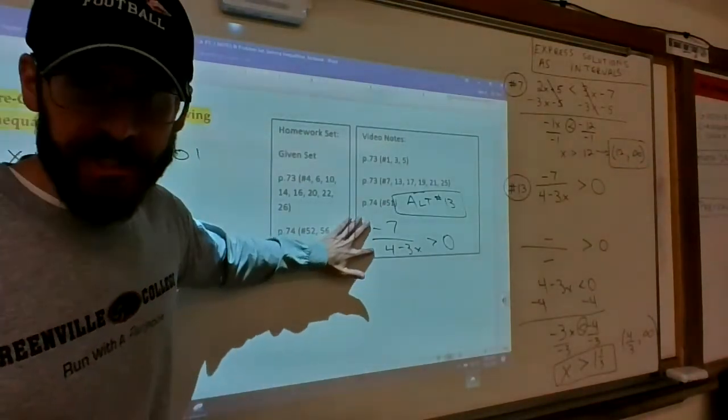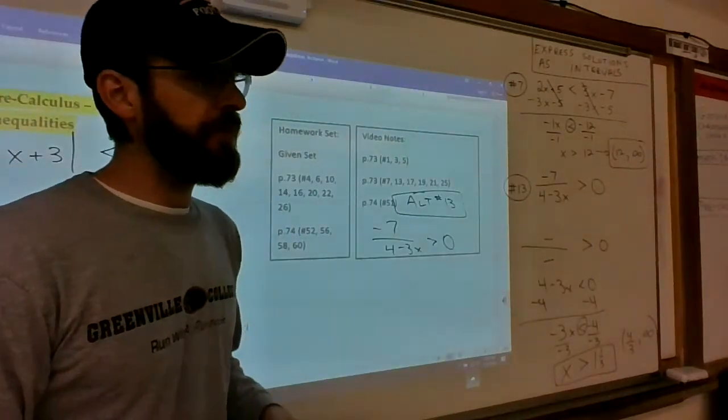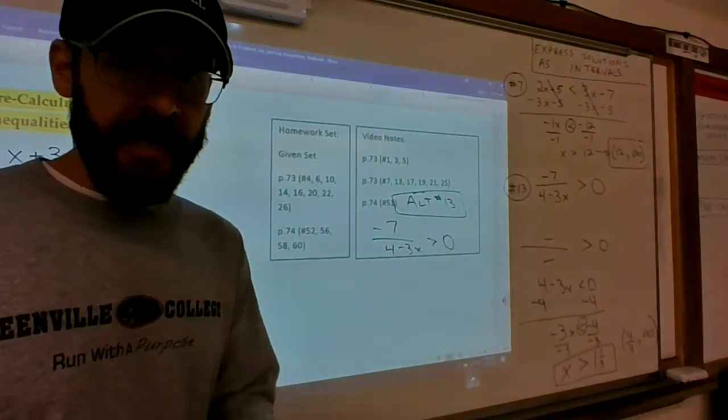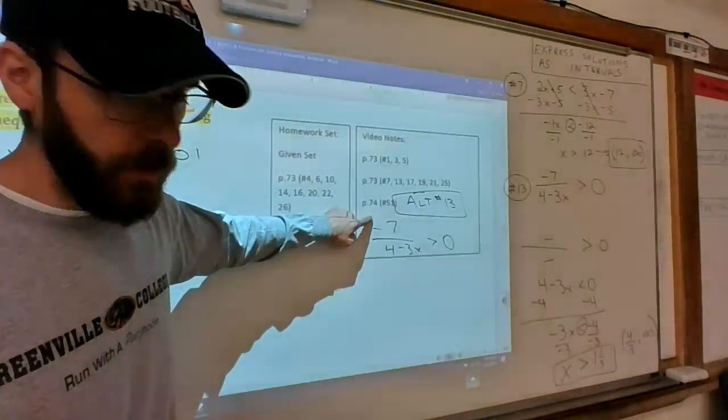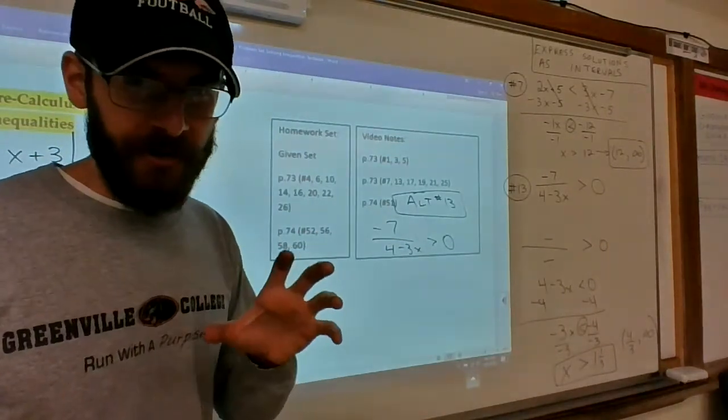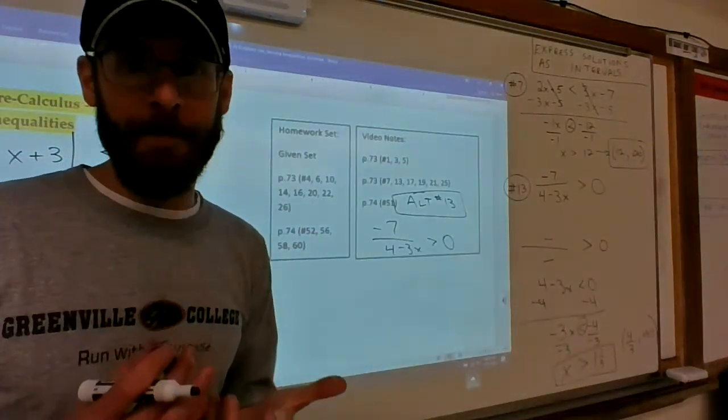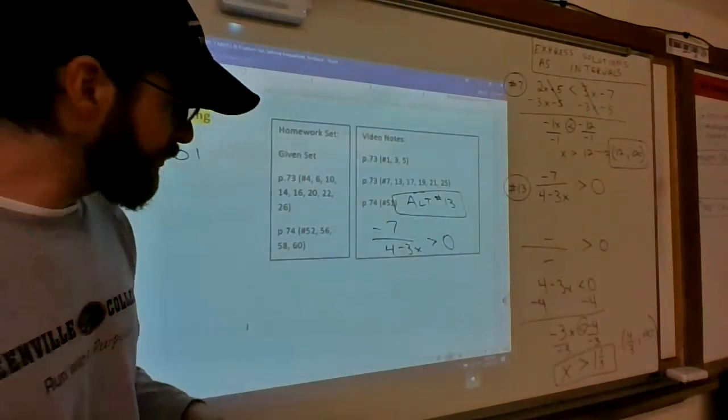When you see a fraction compared to zero with inequalities, there are certain critical numbers where values for x that make the numerator zero or the denominator zero are those critical values at which stuff is happening. You can find the critical numbers first.